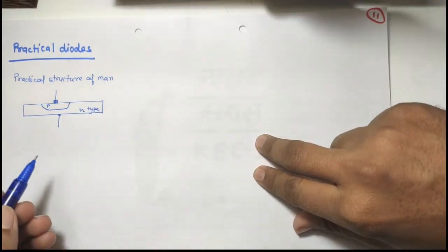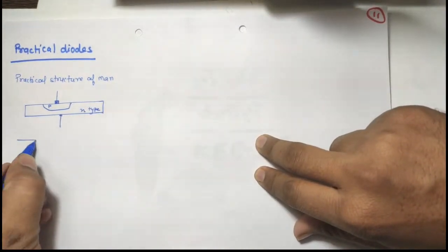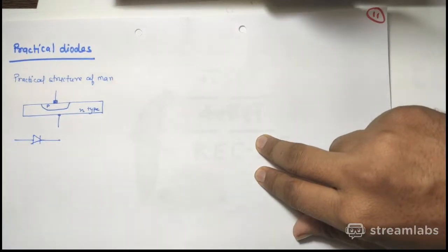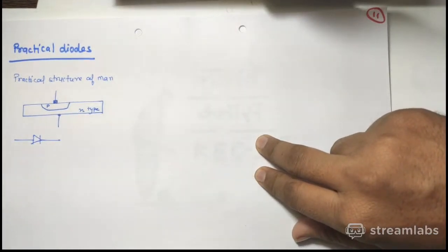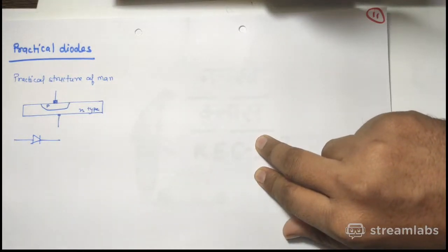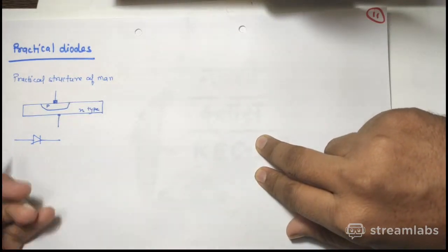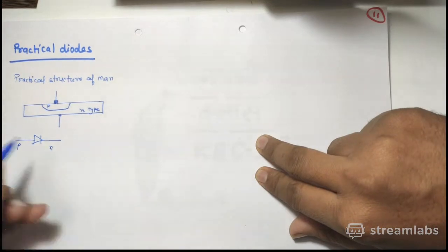So this is a practical structure and the circuit symbol, you already know that this is like this. This is p-type and this was n-type.